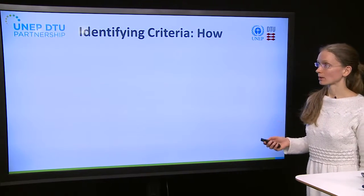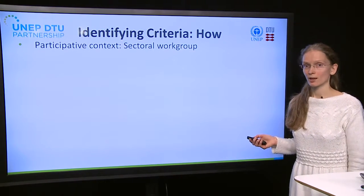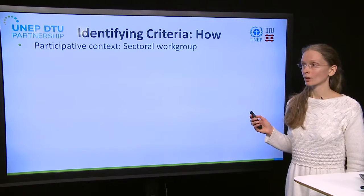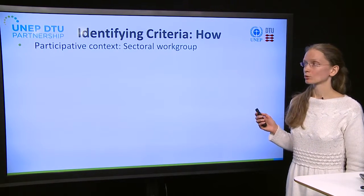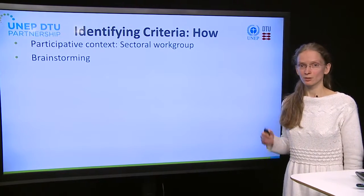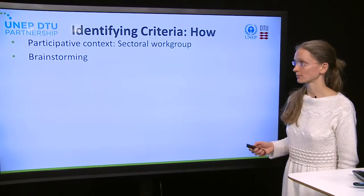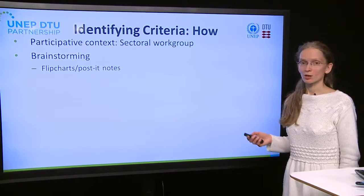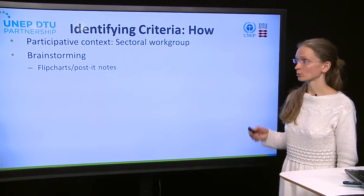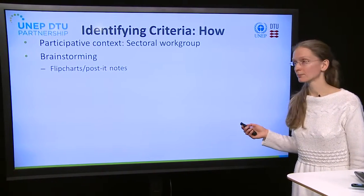It is essential that this is a participative process conducted in sectoral work groups. To create a first list of possible criteria, brainstorming can be used. You can use flip charts or post-it notes, and it can be a good idea to photograph these so that you can have them for review later.